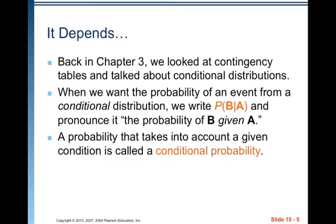Back in Chapter 3, we looked at contingency tables and talked about conditional distributions. When we want the probability of an event from a conditional distribution, we write the probability of B given A — using a notation like an absolute value symbol — and pronounce it 'the probability of B given A.' We're saying: what's the probability of B occurring given that A has already occurred? We know A has occurred; now what's the probability of B? A probability that takes into account a given condition is called a conditional probability.